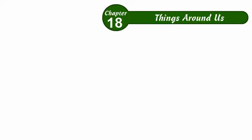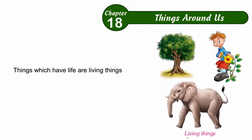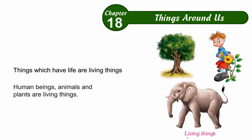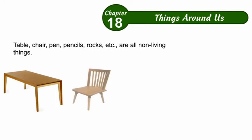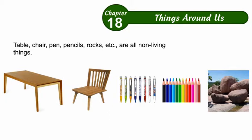Chapter 18: Things Around Us. There exist different things around us. Do all these things have life? No, all things do not have life. Things which have life are living things. Human beings, animals and plants are living things. Table, chair, pen, pencils, rocks, etc. are all non-living things.